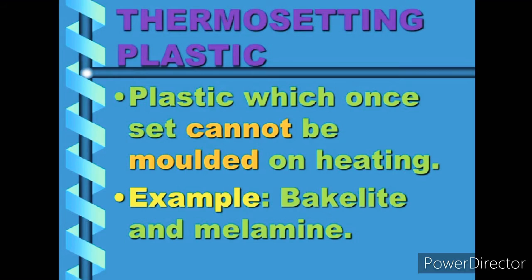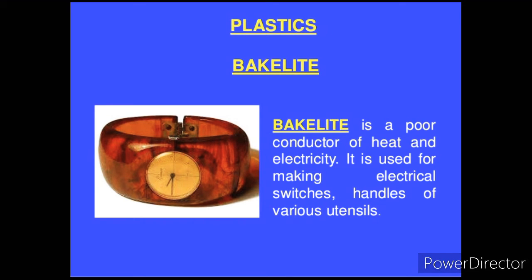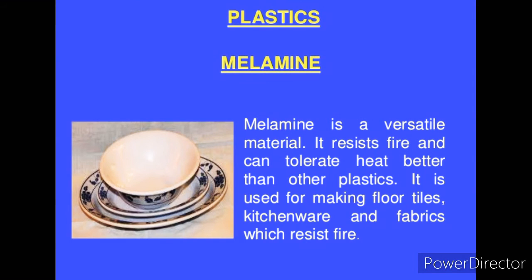Some plastics do not get deformed on heating and cannot be remolded into a new shape — these are called thermosetting plastics. Bakelite and melamine are examples of thermosetting plastics. Bakelite is used for making electrical switches and switchboards because it is a poor conductor of heat and electricity. Melamine is a versatile material that resists fire and can tolerate heat better than other plastics. It is used for making floor tiles, kitchen wares, and fabrics which resist fire.